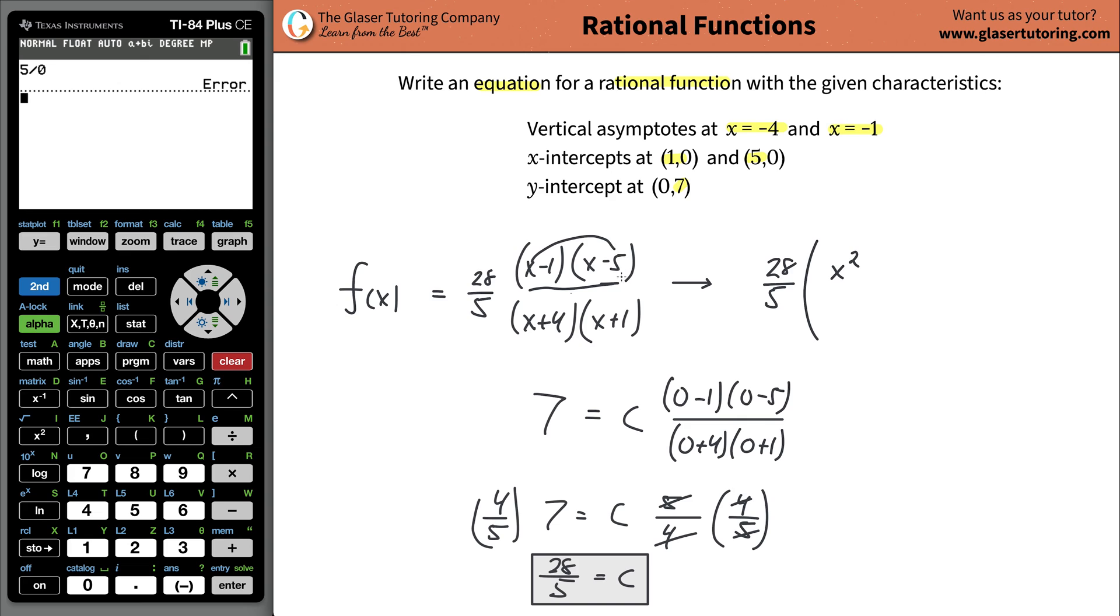You can basically just take this and this, add them together and put an X. And then negative one times negative five is going to be a positive five. Boom. Now, same thing with the denominator. Let's do this quickly. X times X, X squared. Four plus one is going to be five, but throw an X on it. And then four times one is going to be four and you're finished. That's the equation.